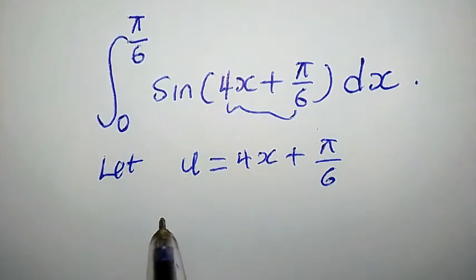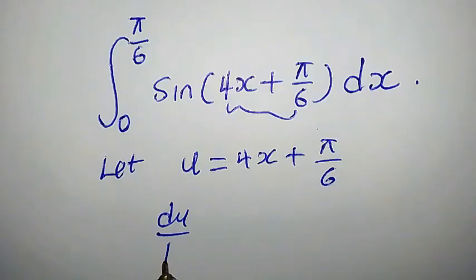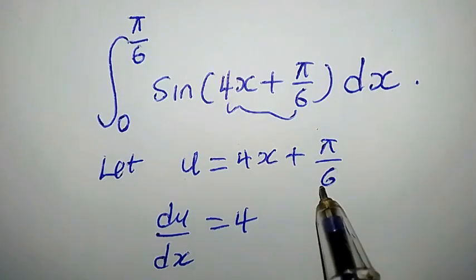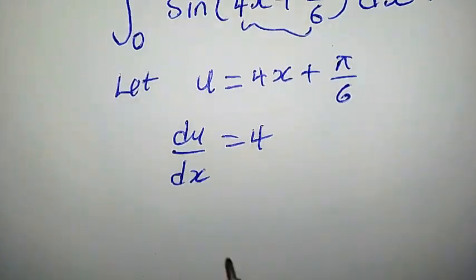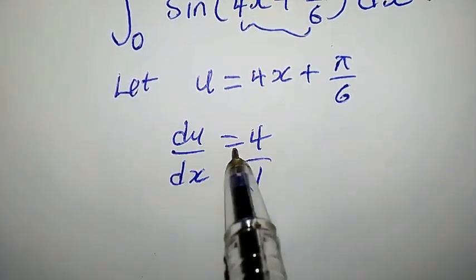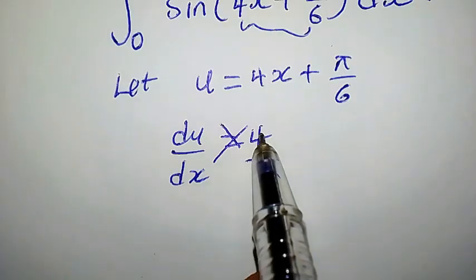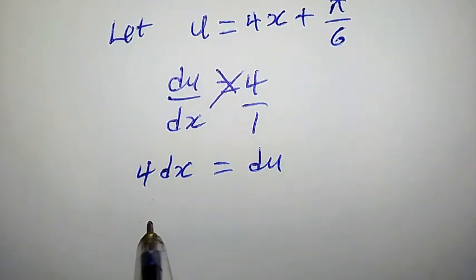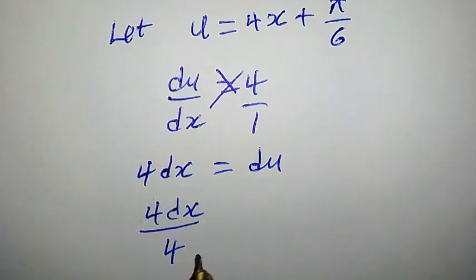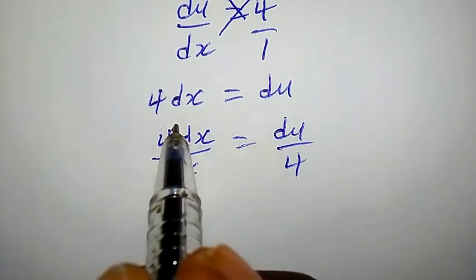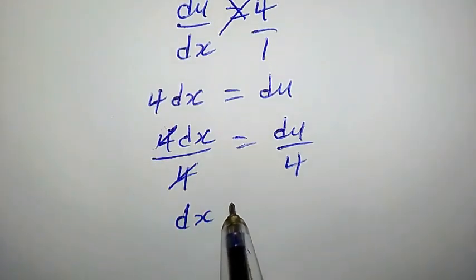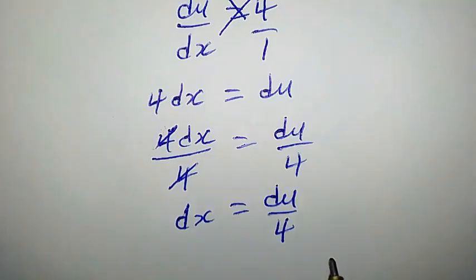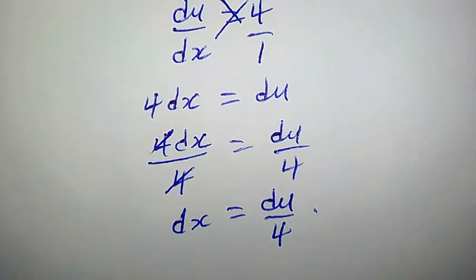Differentiating both sides with respect to x, we get du/dx equal to 4 — the constant term goes to zero. To get dx, we cross multiply: 4·dx = du. Dividing both sides by 4, we have dx = du/4. Let us take note of this.